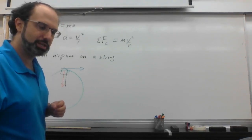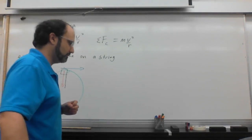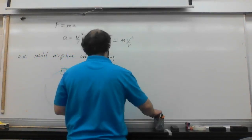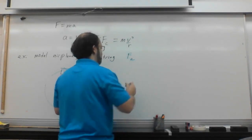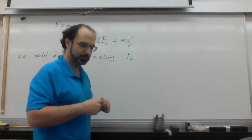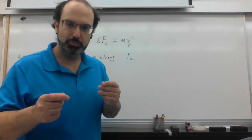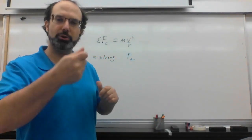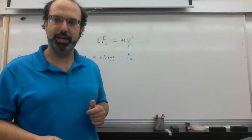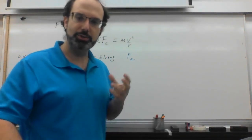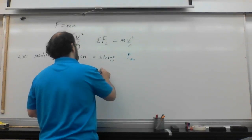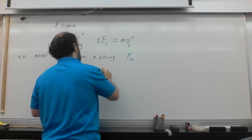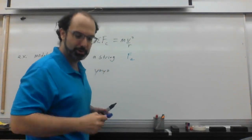What is causing the thing to move in a circle? It's the force of tension, or Fa. If we have a yo-yo and we spin it over our head, it's the same thing. The yo-yo is an object on a string, so a yo-yo on a string would also be Fa.